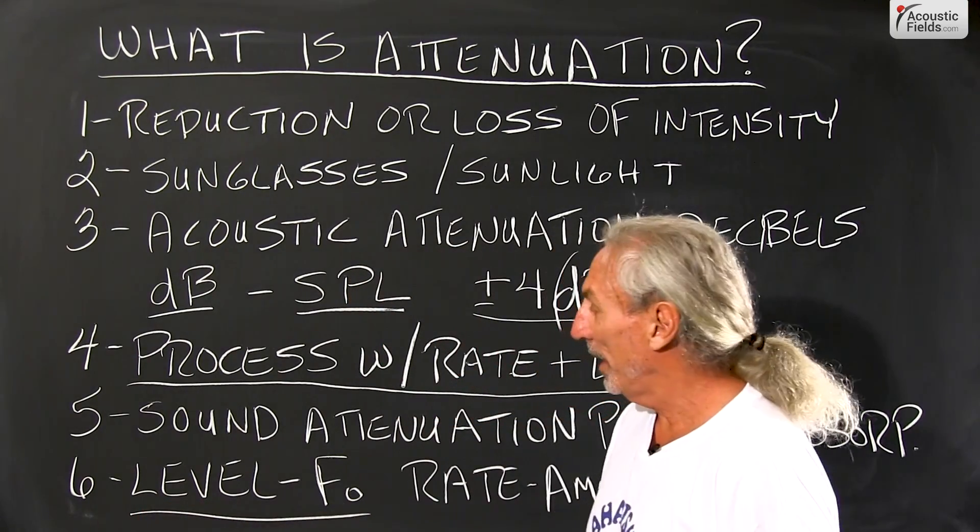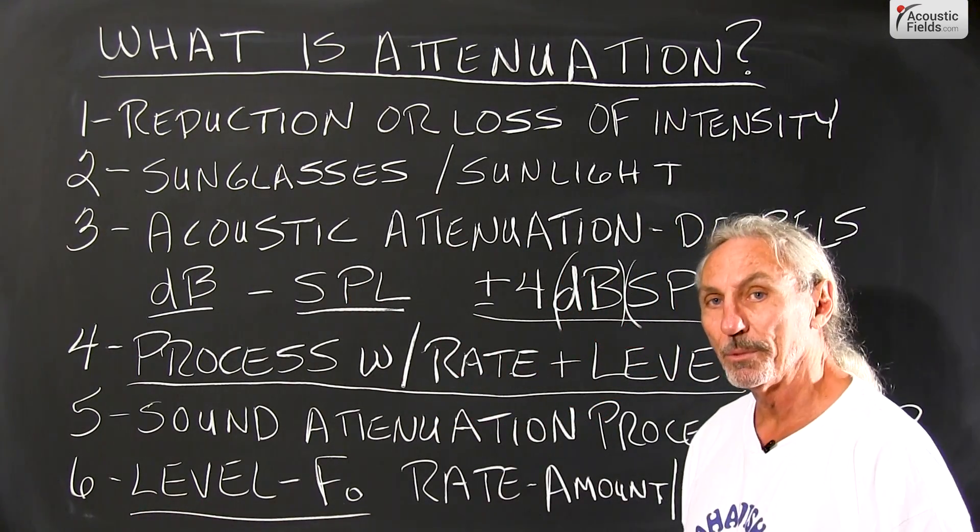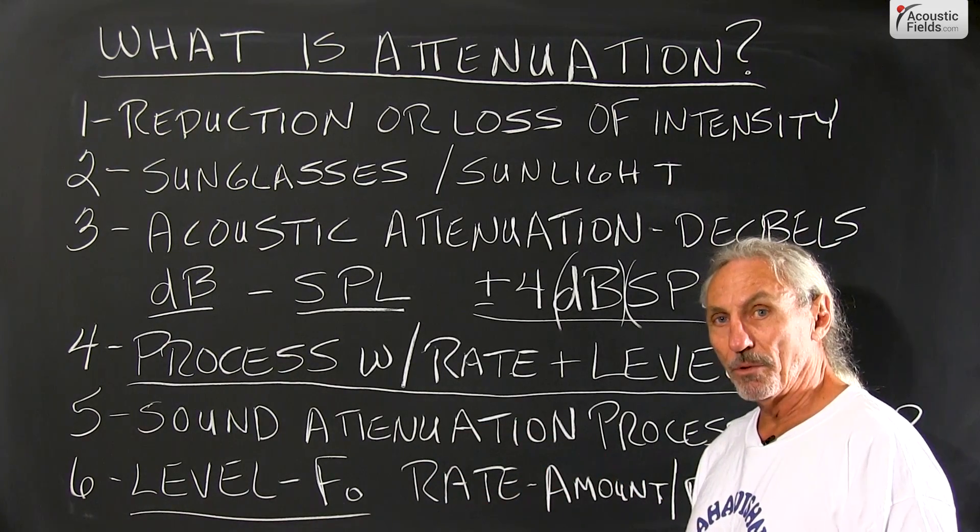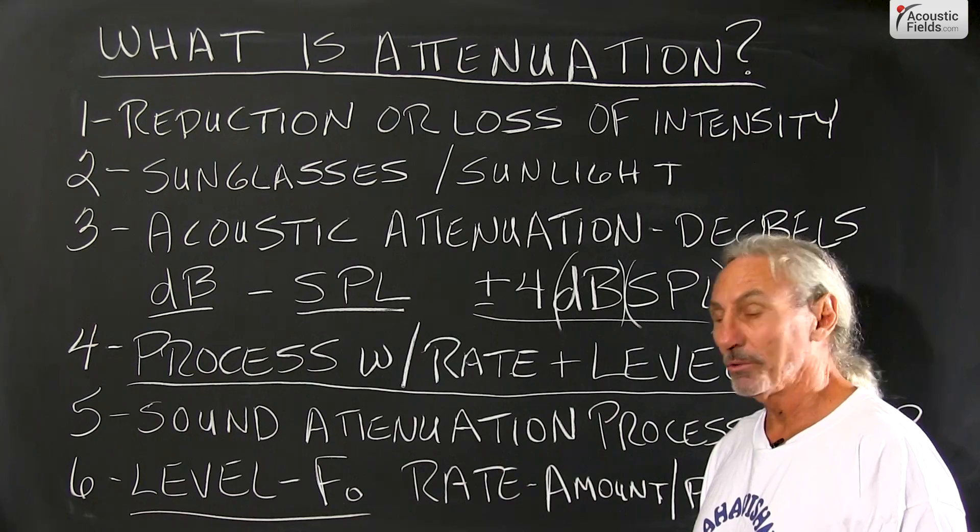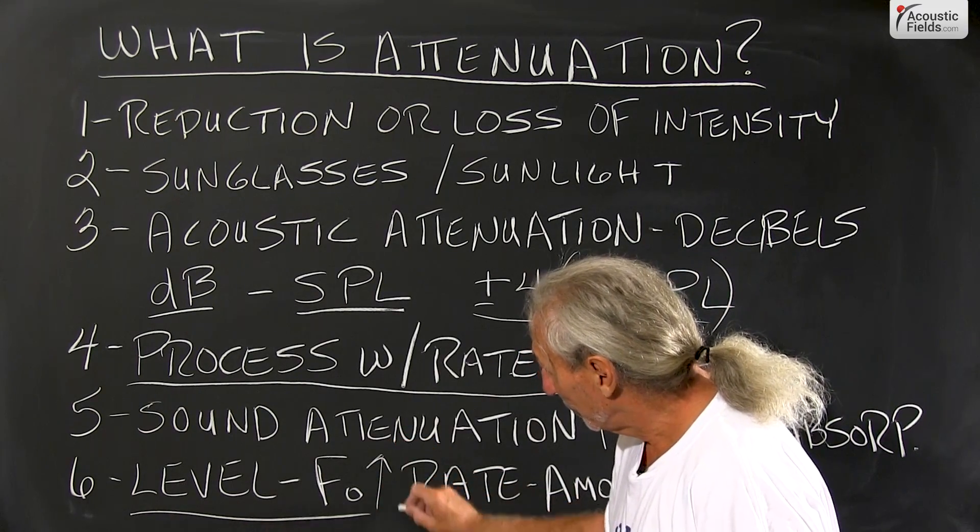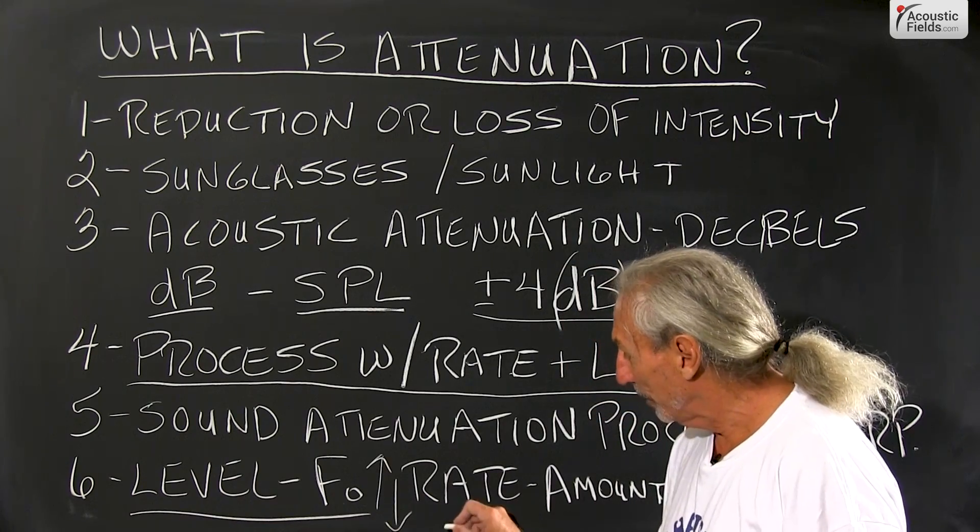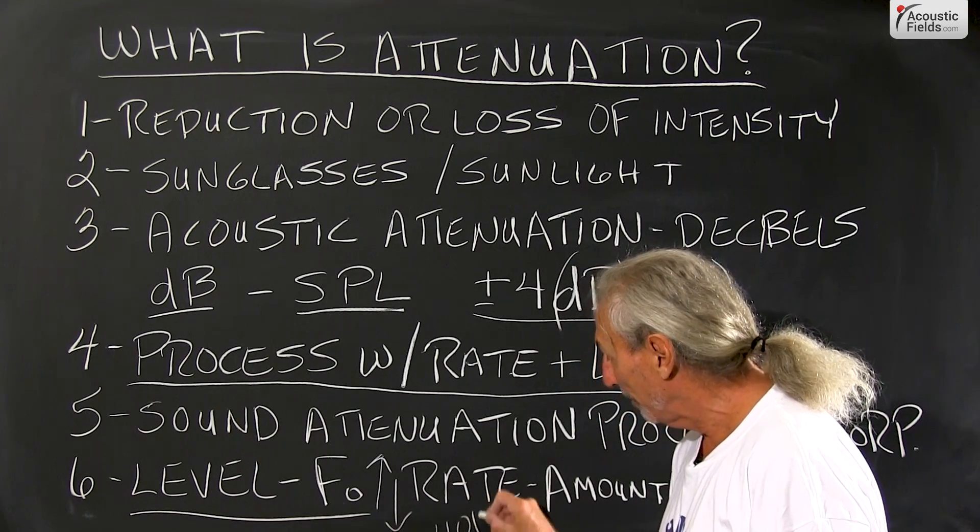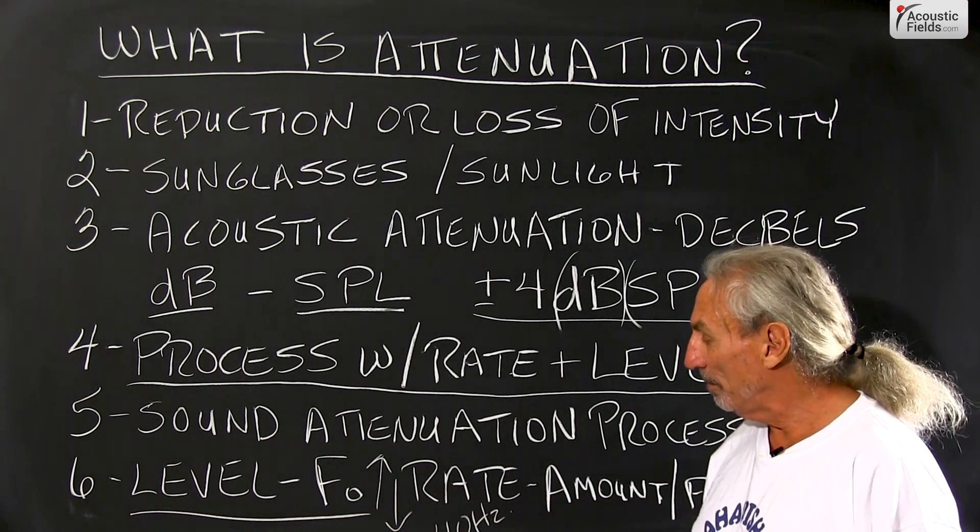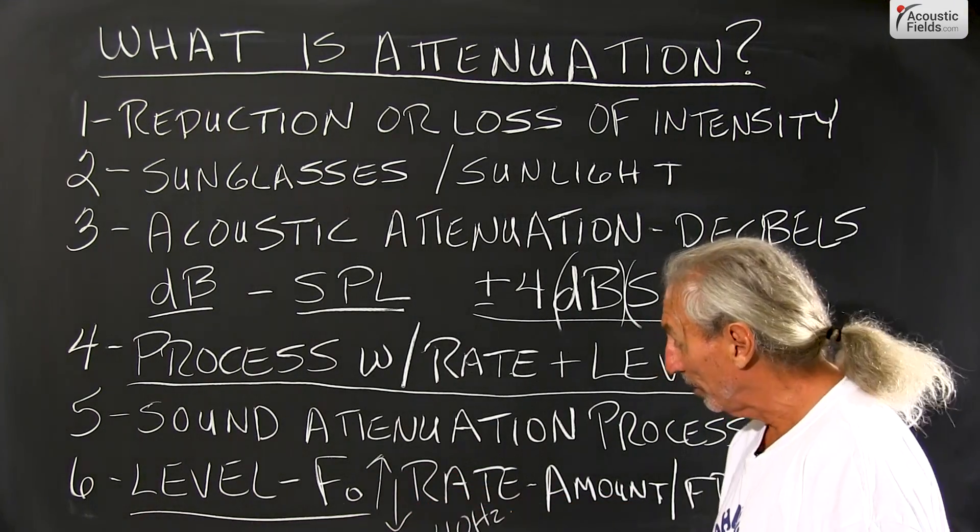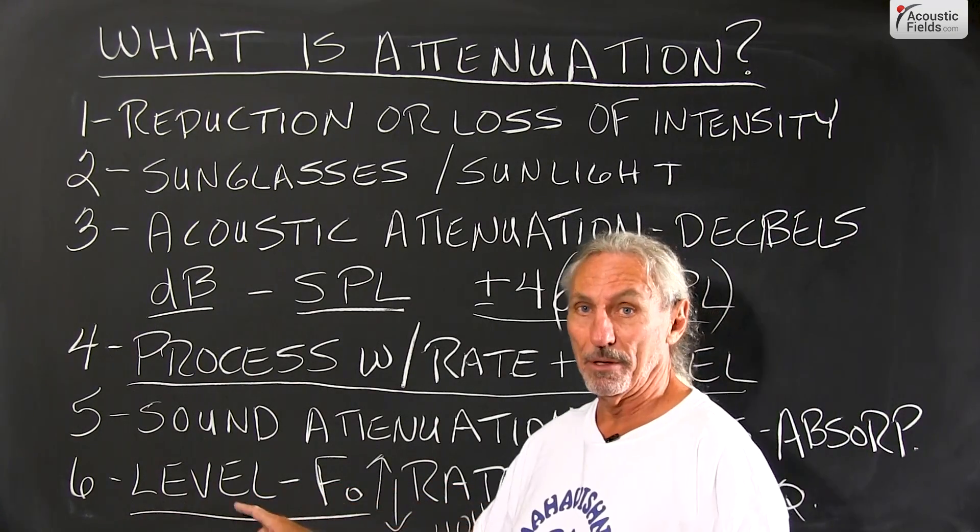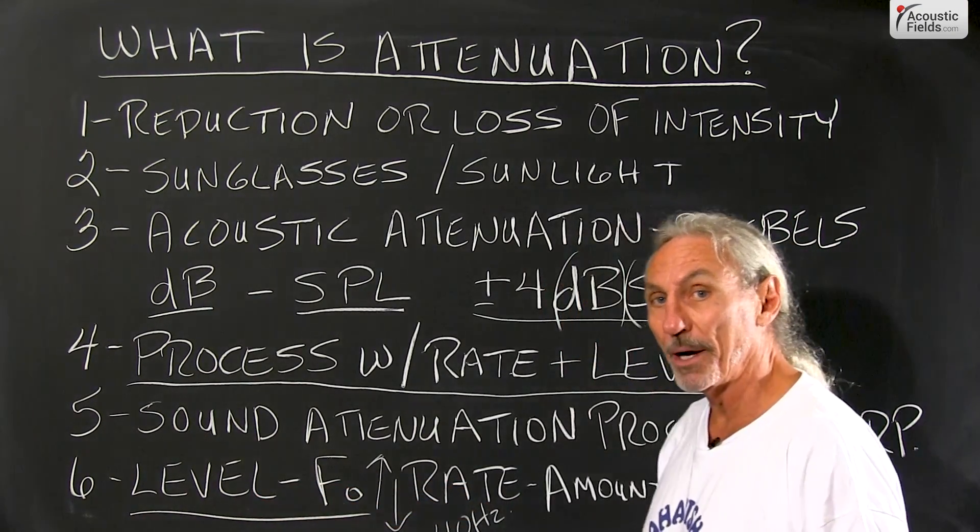Level: when you build a product to absorb energy, level is the frequency of resonance or how low that product will go. Energy above that number is absorbed and energy below is not. So let's say we design a product that goes down to 40 cycles. Everything above 40 will be absorbed, everything below 40 will not be. That's the level of absorption that that product produces.